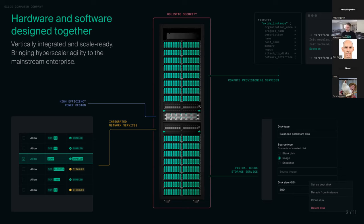It's a fully integrated design. When a customer rolls this into their data center, there are a couple of technician ports to allow them to set up basic parameters — like do I need BGP, do I need static routing? We take a little information in through those ports, and then the whole rack sets itself up. It provides an API for instantly launching virtual machines and setting up networks. If you're used to AWS or GCP, it provides that type of interface.